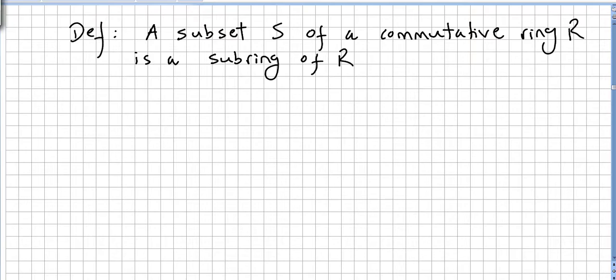In this video we introduce the concept of a sub-ring, of course a sub-ring of commutative rings. A subset S of a commutative ring R is a sub-ring of R if three things happen.